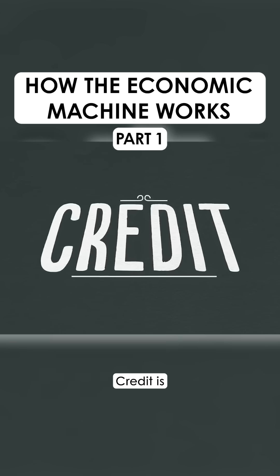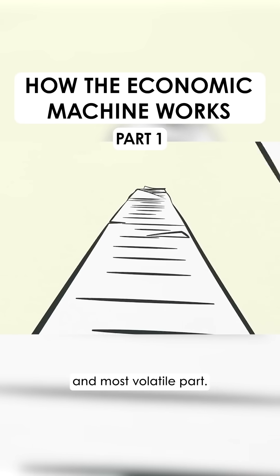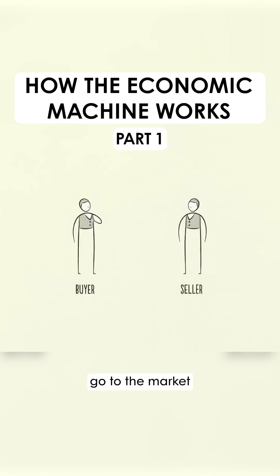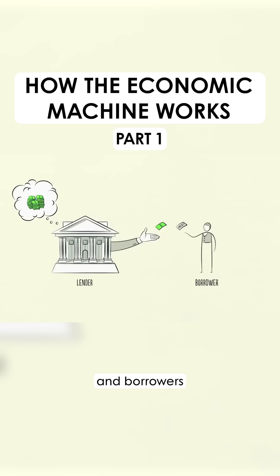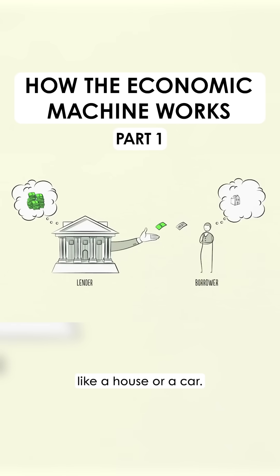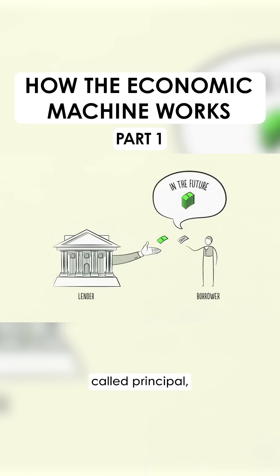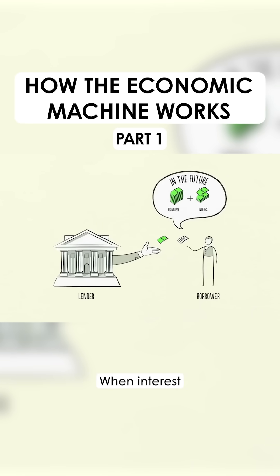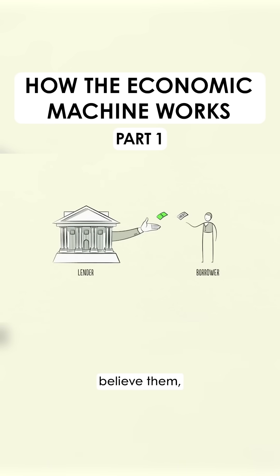Credit is the most important part of the economy and probably the least understood. It's the most important part because it's the biggest and most volatile part. Just like buyers and sellers go to the market to make transactions, so do lenders and borrowers. Lenders usually want to make their money into more money, and borrowers usually want to buy something they can't afford, like a house or a car, or they want to invest in something like starting a business. Credit can help both lenders and borrowers get what they want. Borrowers promise to repay the principal plus interest. When interest rates are high, there is less borrowing because it's expensive; when interest rates are low, borrowing increases because it's cheaper. When borrowers promise to repay and lenders believe them, credit is created. Any two people can agree to create credit out of thin air.